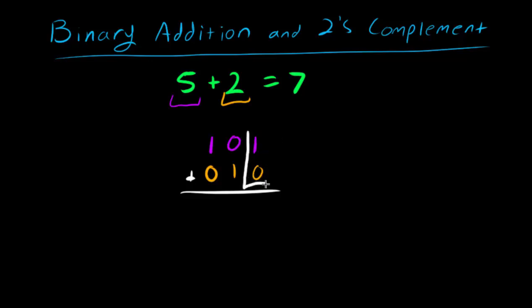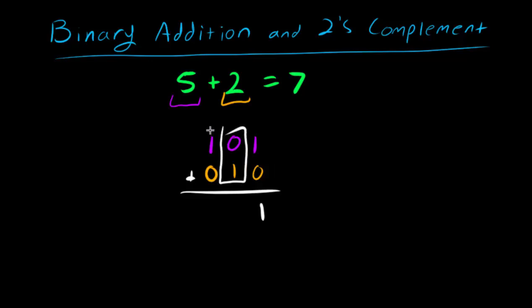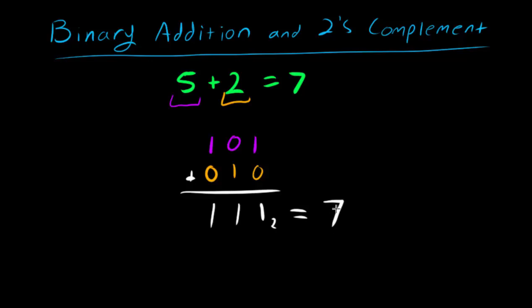Starting at the rightmost column: 1 plus 0 in binary is just 1, because 0 added to anything is just itself. Moving to the second column: 0 plus 1 is just 1 again. And the next column over: 1 plus 0 equals 1. If we convert this result from binary base 2 into decimal, we get 7, which is exactly what we were expecting.